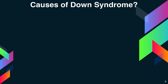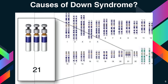What are the causes? Human cells normally contain 23 pairs of chromosomes. One chromosome in each pair comes from the father and the other comes from the mother. Down syndrome results when abnormal cell division involving chromosome 21 occurs. These cell division abnormalities result in an extra partial or full chromosome 21. This extra genetic material is responsible for the characteristic features and developmental problems of Down syndrome.